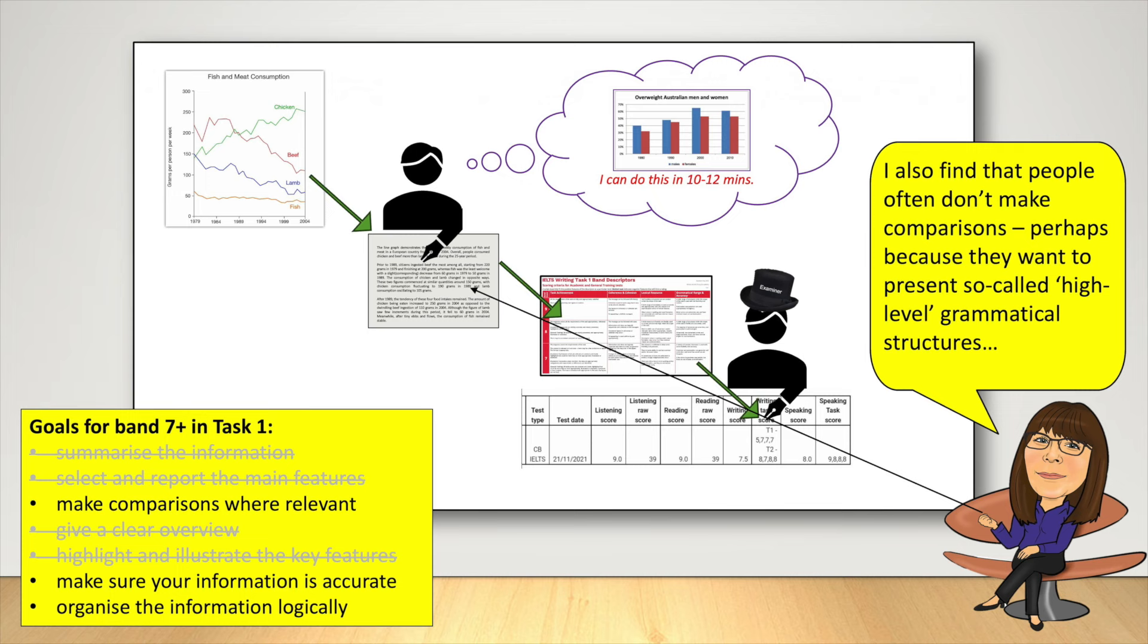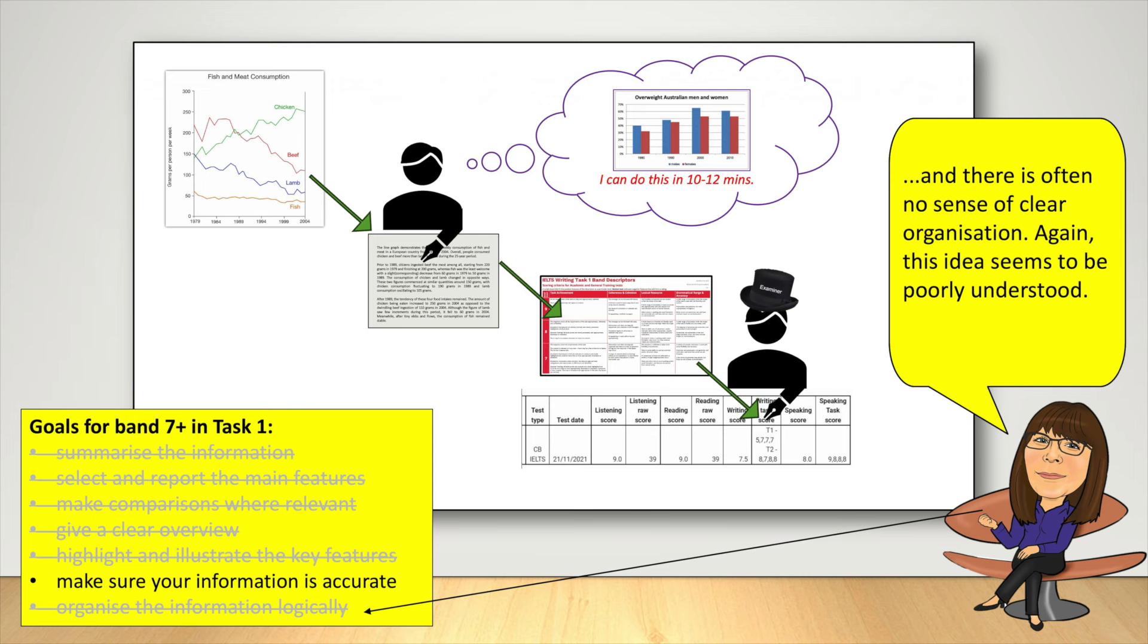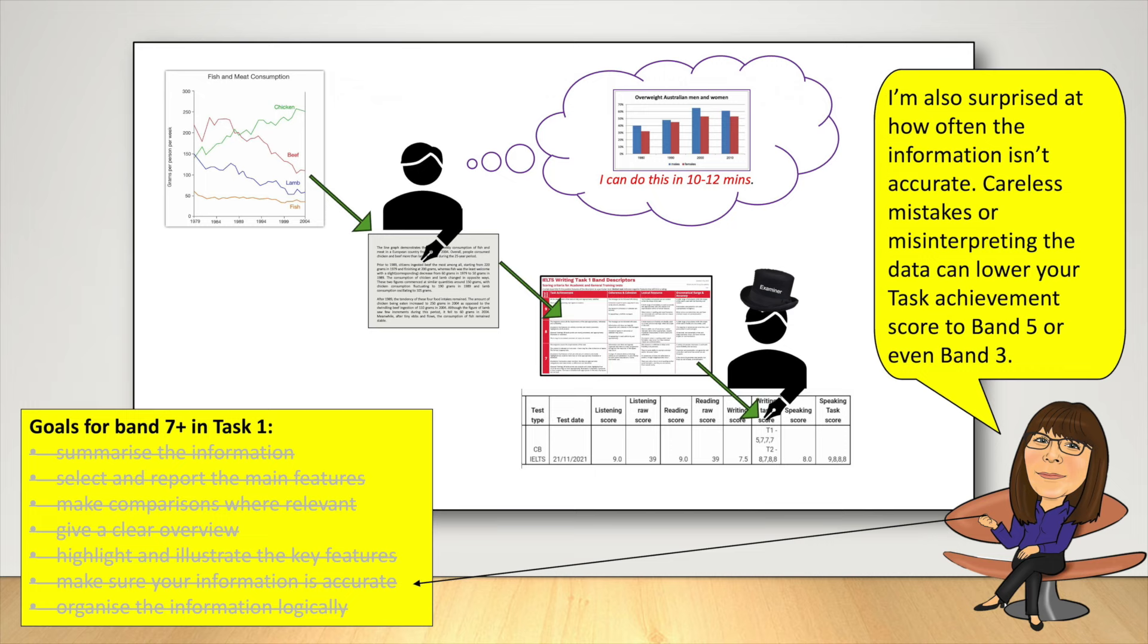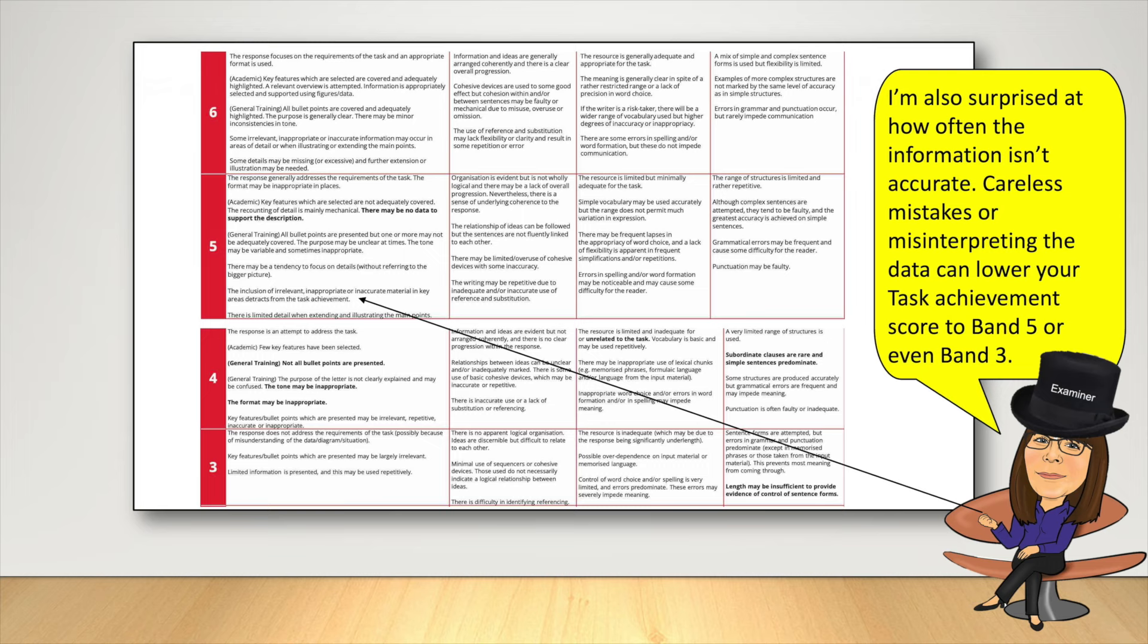I also find that people often don't make comparisons, perhaps because they want to present so-called high-level grammatical structures, and there is often no sense of clear organization. Again, this idea seems to be poorly understood. I'm also surprised at how often the information isn't accurate. Careless mistakes or misinterpreting the data can lower your task achievement score to band five, or even band three.